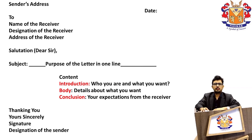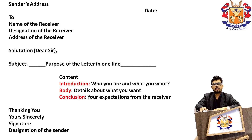Then we start with the actual content, which is divided into three parts. The first is the introduction, in which we try to tell who we are and what we exactly want. This is followed by the body of the letter, which describes the details about what you want. And finally, the conclusion, where we mention our expectations from the receiver.